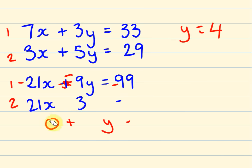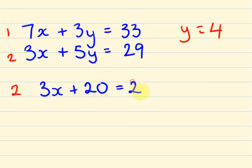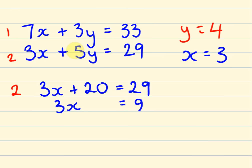We'll substitute our values in. I'm going to do equation 2 this time. We end up with 3x plus 5y — 5 times 4 is 20 — and it equals 29. Taking 20 off both sides, we end up with 3x equals 9, therefore x equals 3. The link I'll put up throughout this video is going to show you a different way of working these out — a way that you don't have to multiply as much. It's a way of really quickly working these out. Anyway, I hope that was of some help. See you next time.